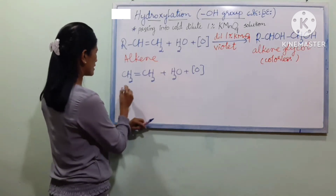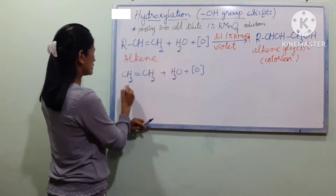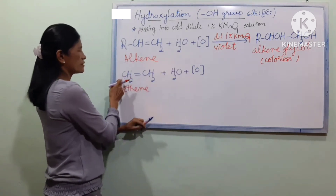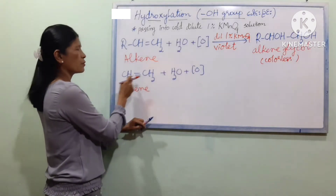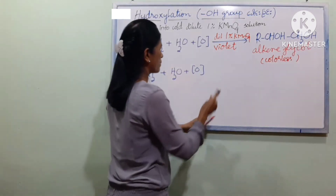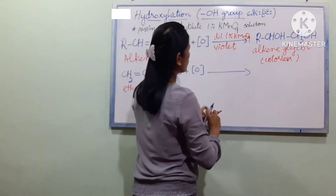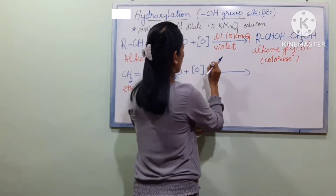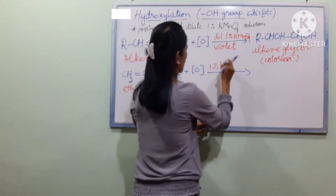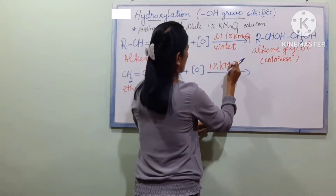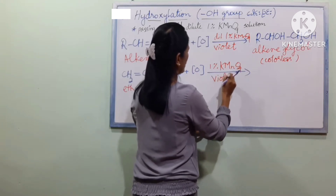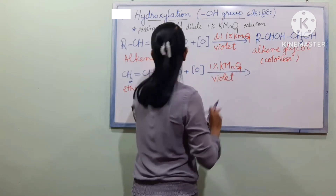Using H2O with cold dilute 1% KMnO4 to allow the hydroxylation reaction. The KMnO4 solution turns violet — VIOLET color change occurs.